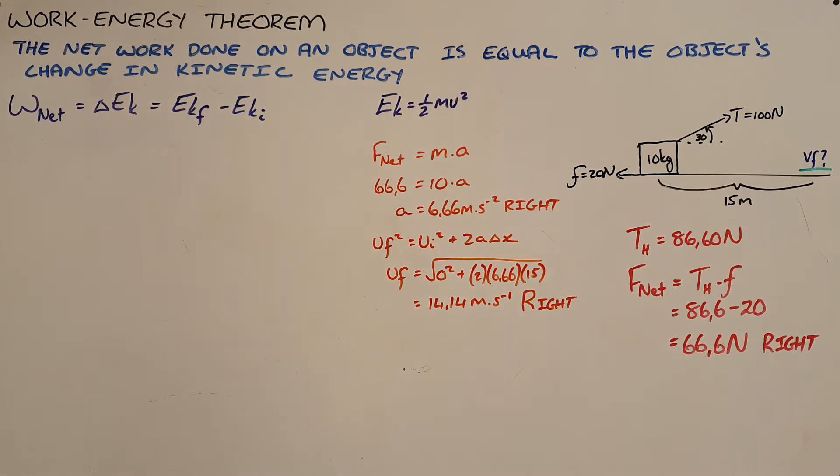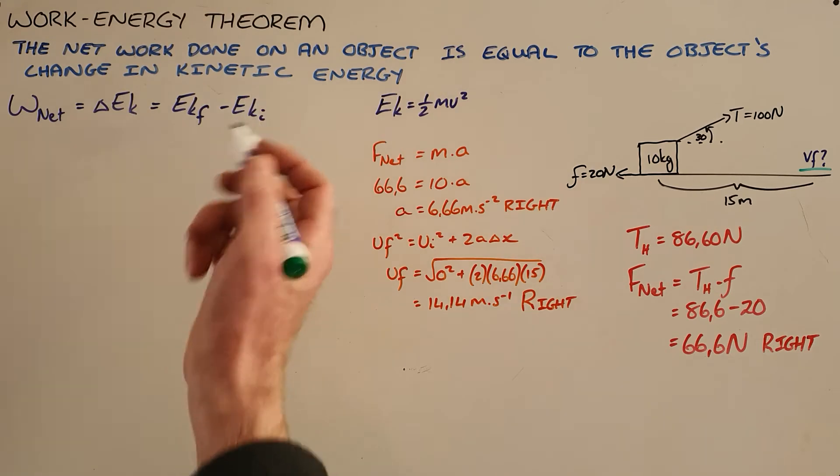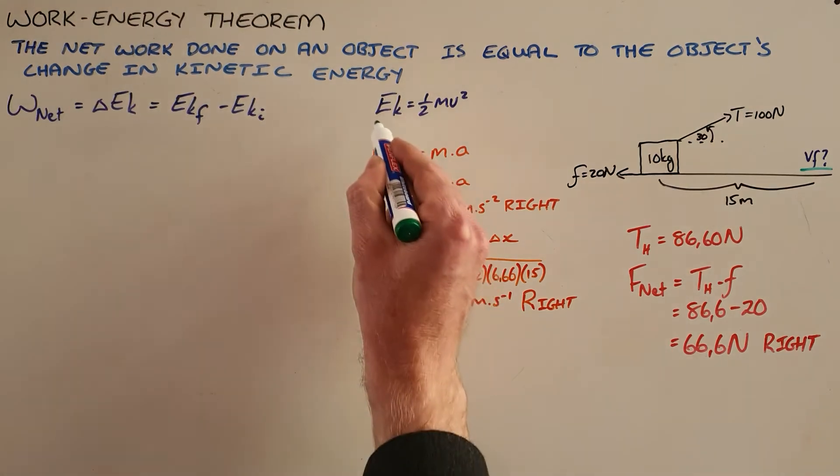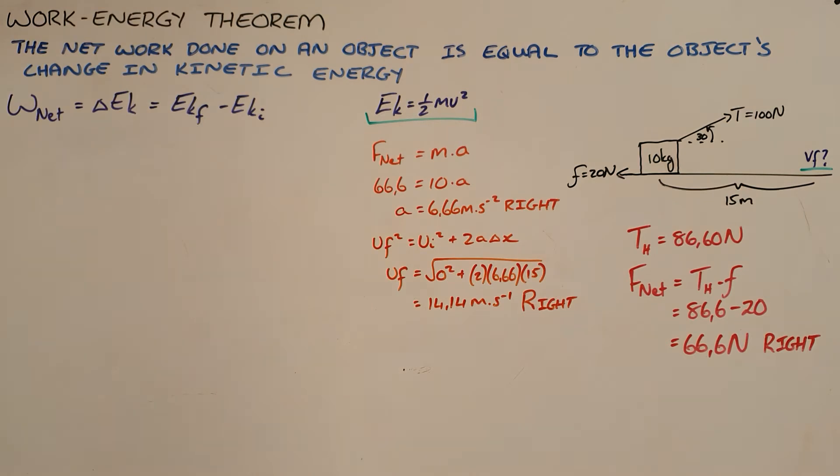Now once we have a concept of work, we can use the work energy theorem which states that the net work done on an object is equal to the object's change in kinetic energy. That can be written in the formulas, network is equal to delta Ek or Ek final minus Ek initial, where we remember that Ek is our kinetic energy, which is the energy as a result of an object's motion.